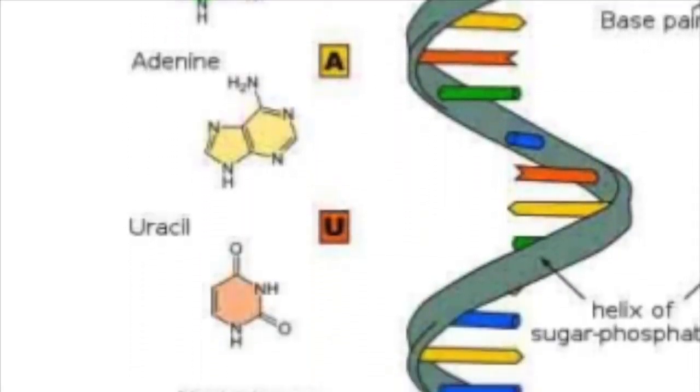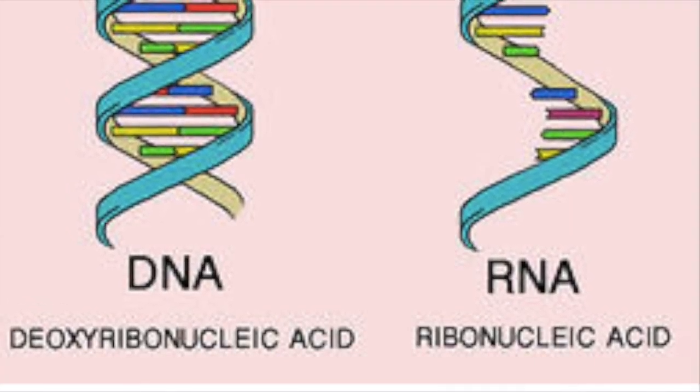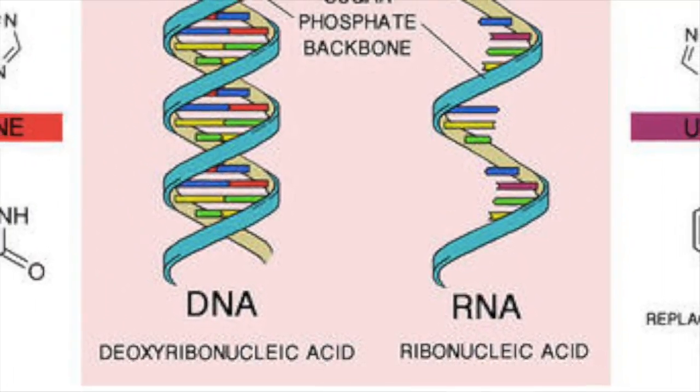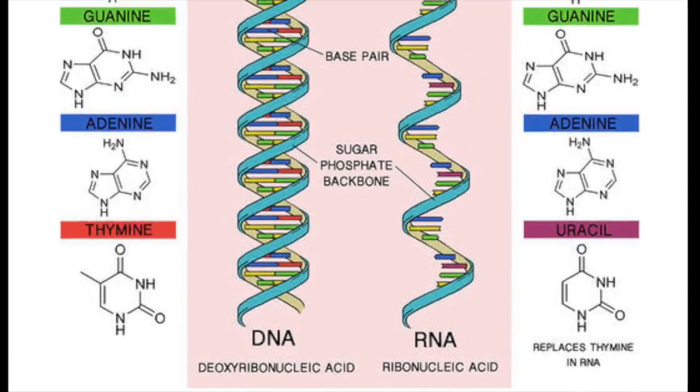A comparison of DNA and RNA with the bases of each shown. Notice that in RNA, uracil replaces thymine.